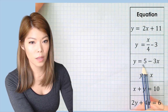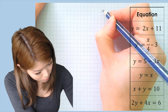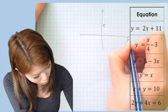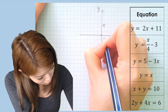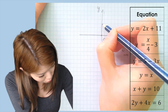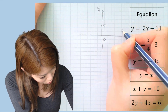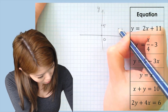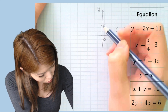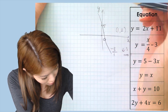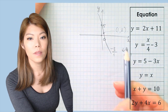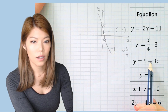For the next equation, y-intercept is 5 and gradient is negative 3. Down 3 from 5 gives a y value of 2, and across 1 means we're at x equals 1. So (1, 2) is our second point. That gives us a negative line, which corresponds with the negative gradient.